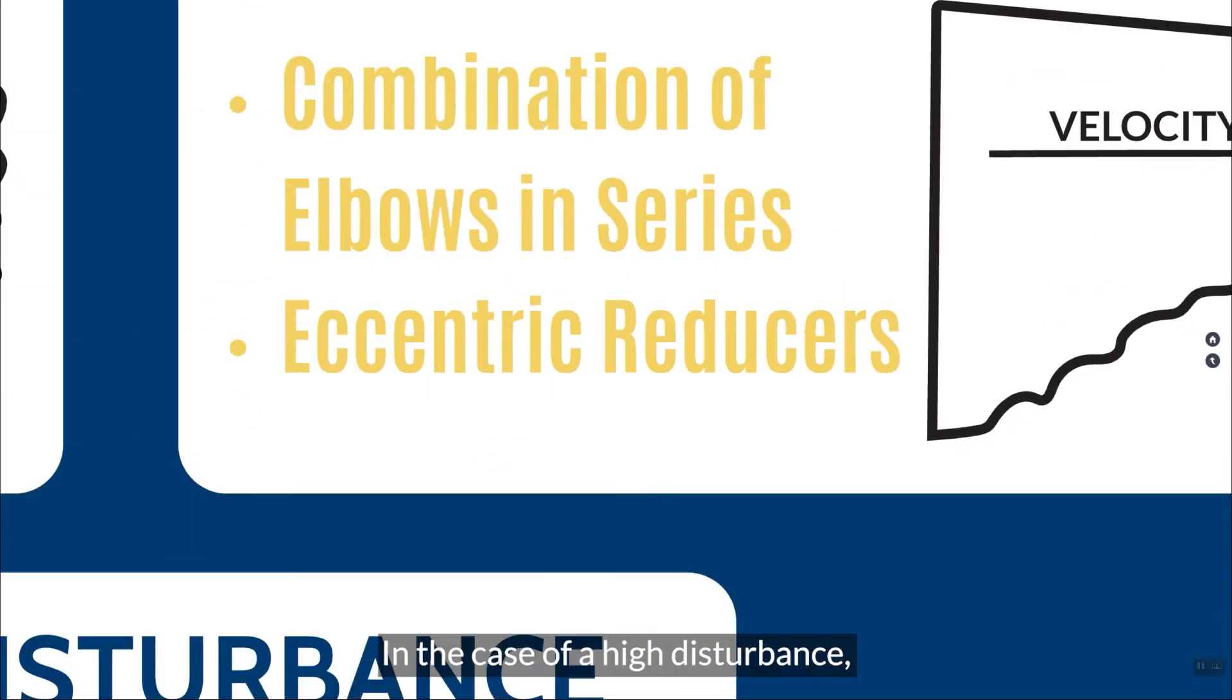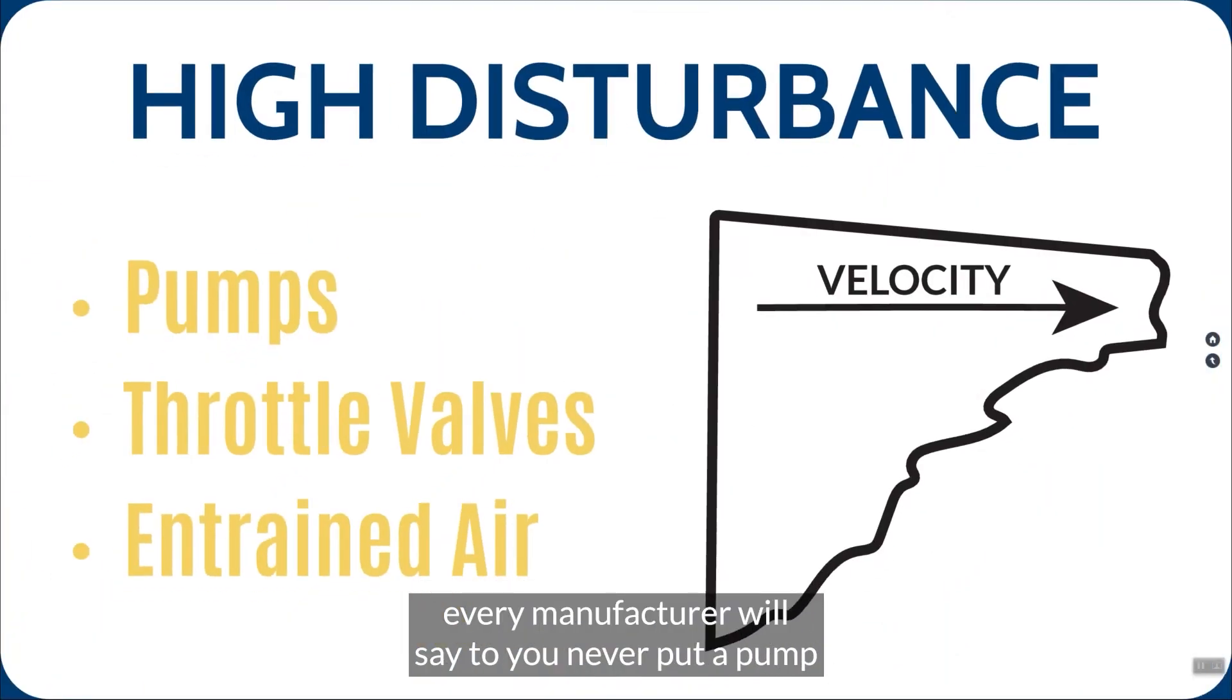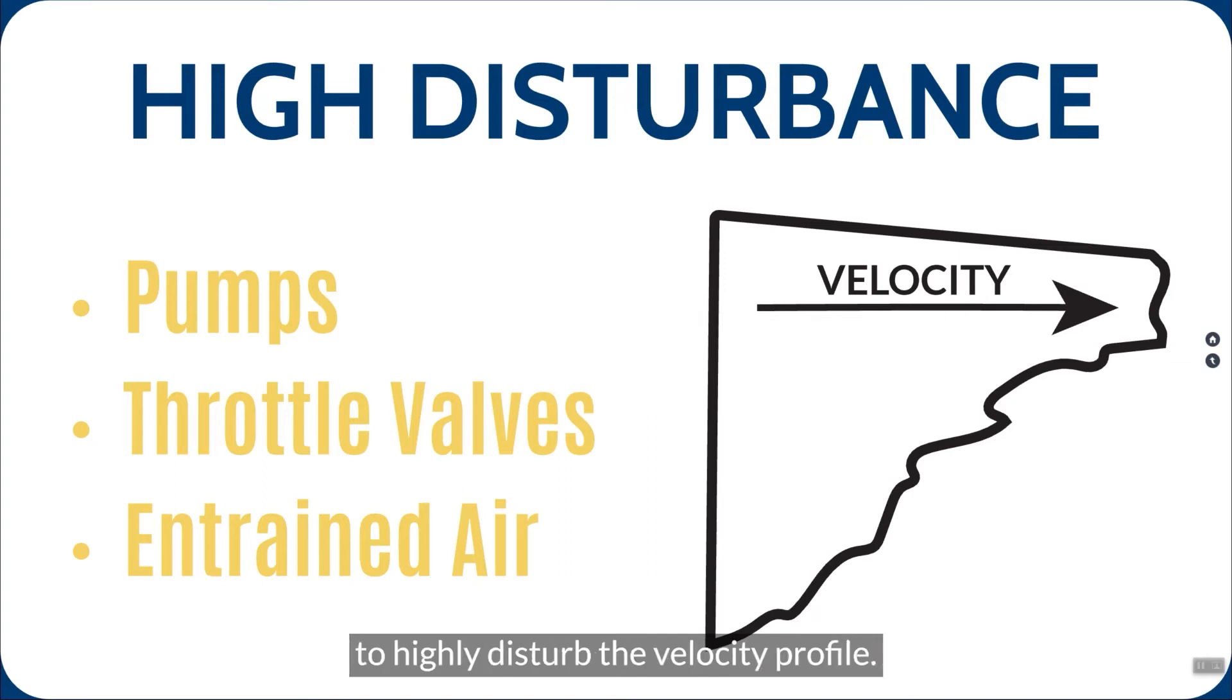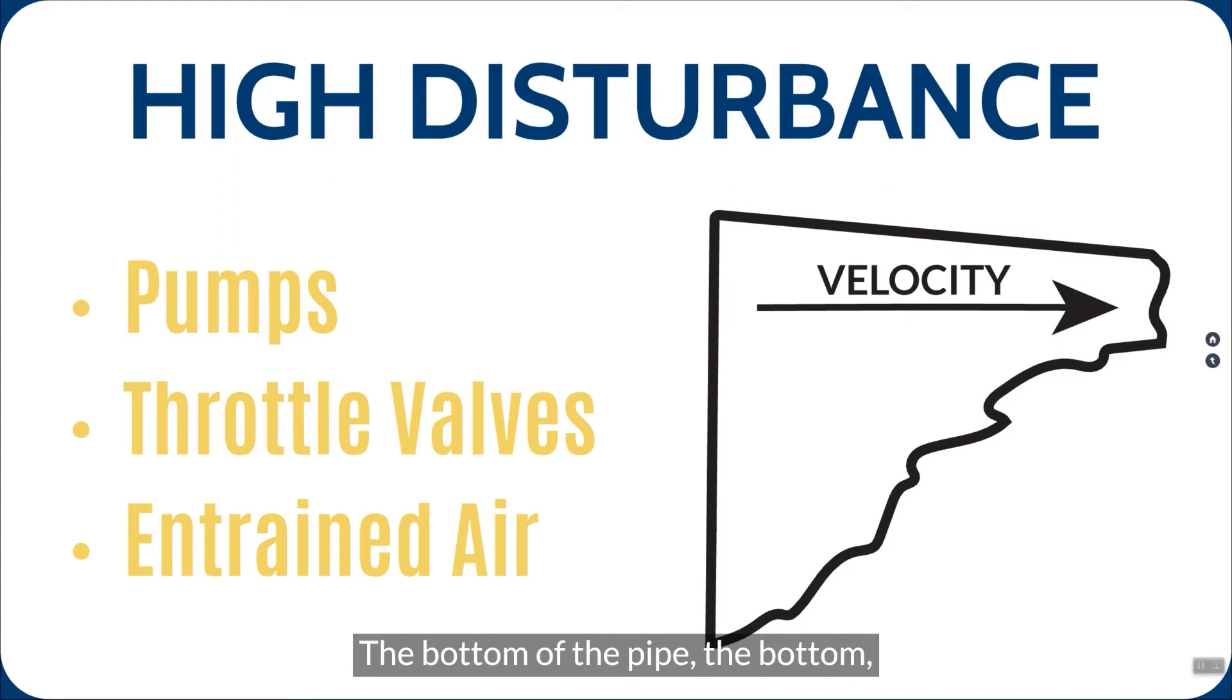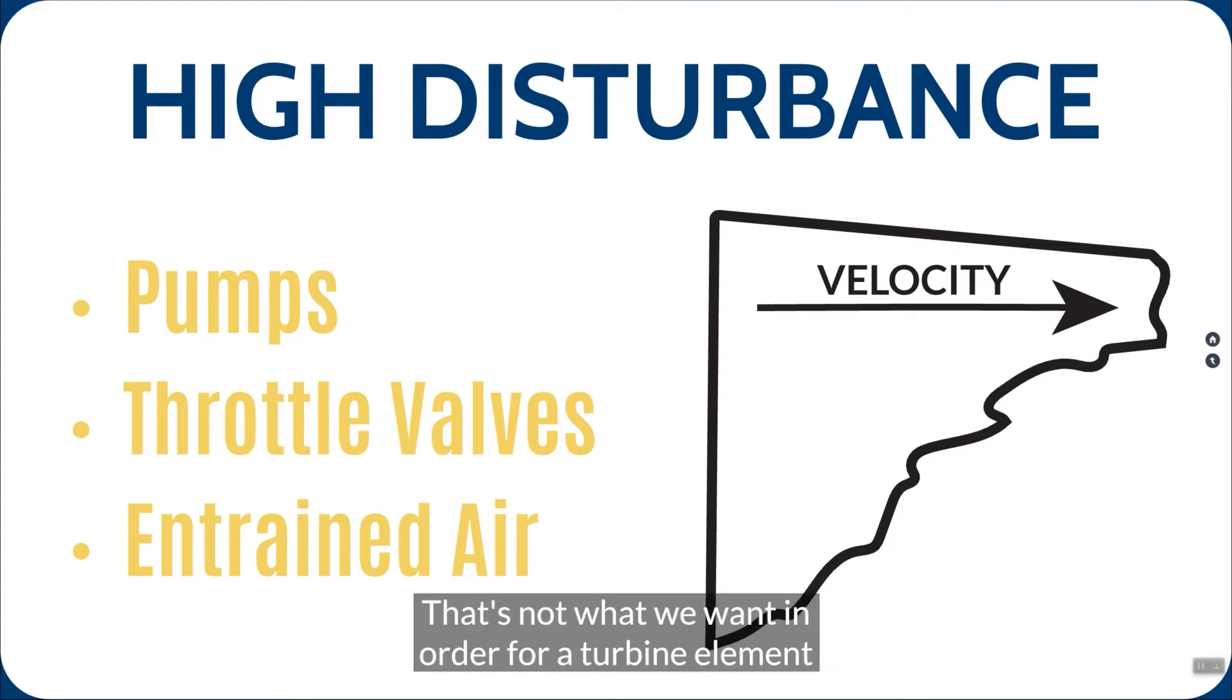In the case of a high disturbance, every manufacturer will say to you, never put a pump or a throttle valve or entrained air before the meter. They're saying that because it's going to highly disturb the velocity profile. I'm going to have something that could look like this. At the top of this pipe, it's moving very fast. The bottom of the pipe, the bottom, probably three quarters of the pipe, moving very slow, very erratic. That's not what we want in order for a turbine element to properly infer the correct volume of water.